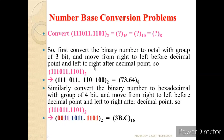Let us convert the binary fractional number to octal by grouping of 3 bits. Since a fractional number is given, we move from the decimal point to the left and also to the right. From the decimal point leftward, we group: 011 and 11 (padded to 011). After the decimal point, we group: 101 and 1 (padded to 100). The result is 73.64 in octal.